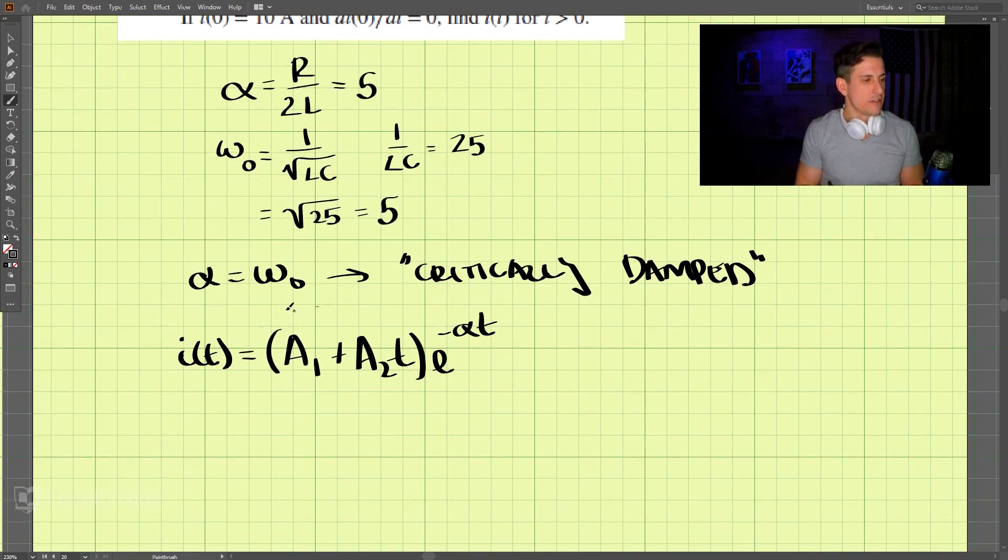Okay, so this is our equation. And we know alpha here, we just calculated that as 5. So this equation is A1 plus A2 times t, e to the negative 5t. Okay, so we have this form of the equation. And now we just need to solve for A1 and A2.